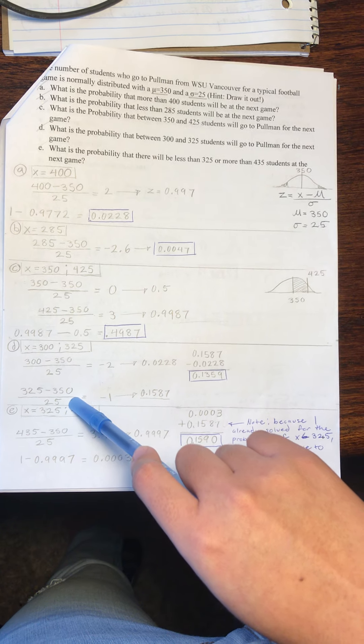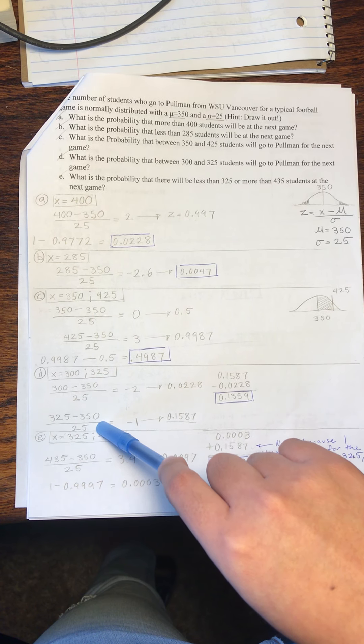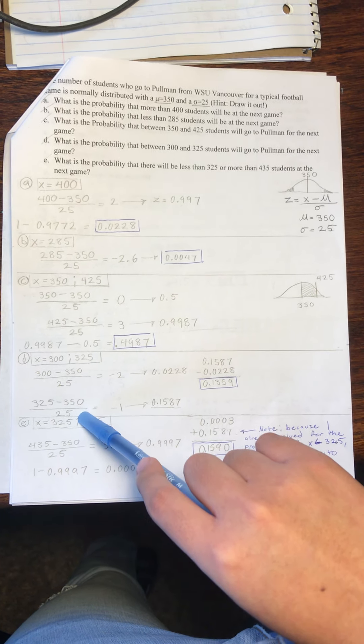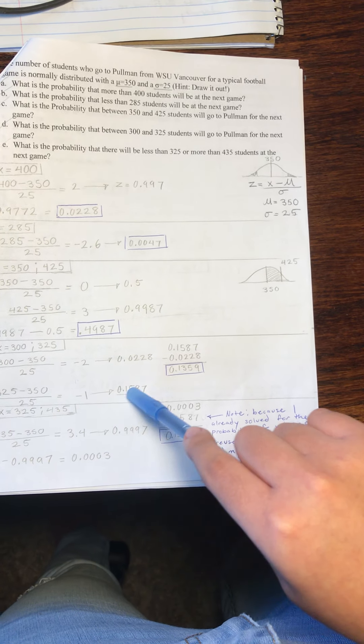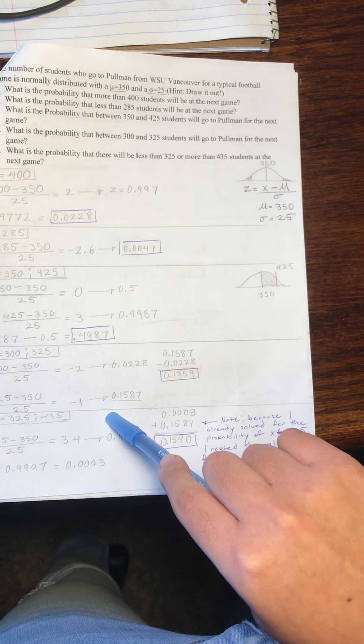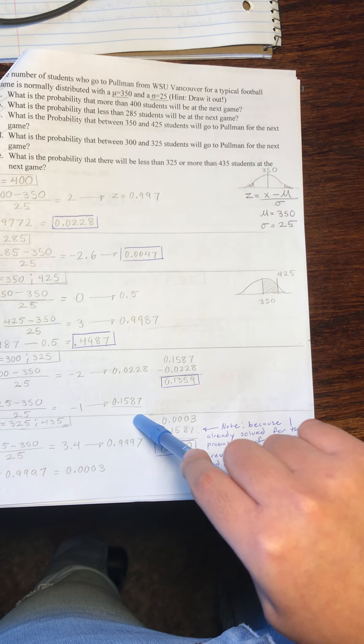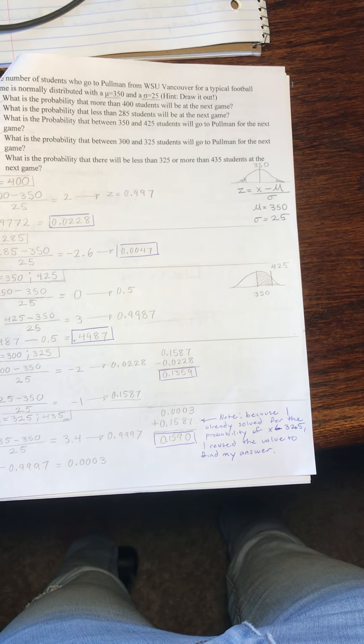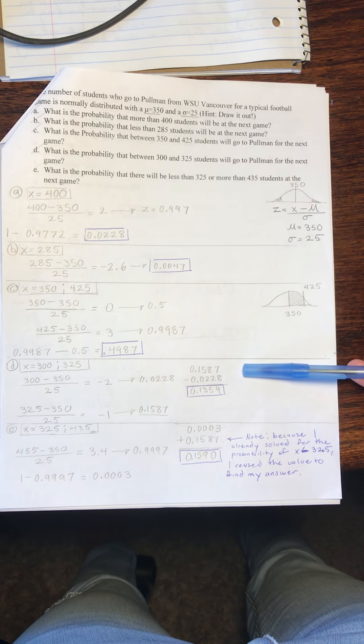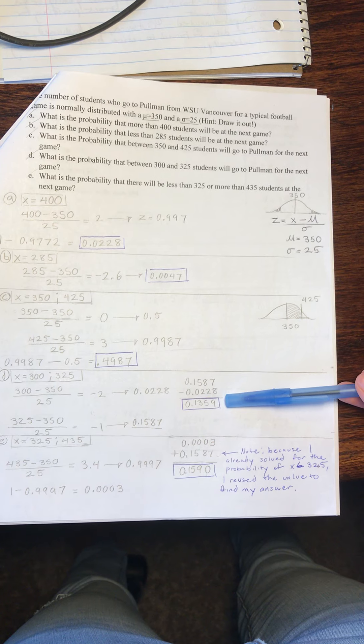For the second equation, we have 325 minus 350 over 25, and that will give us a result of negative 1. When we look that up on our z table, we end up with 0.1587. We take the big value and subtract the smaller value, and that will give us our result.